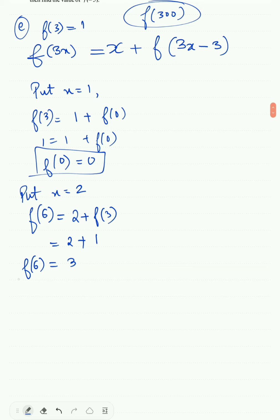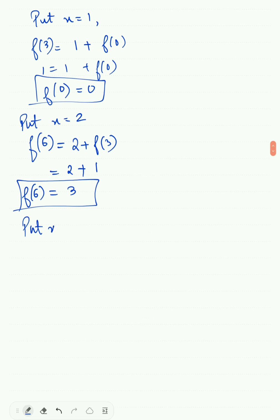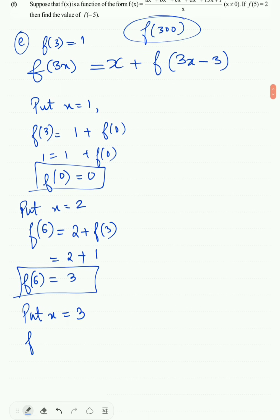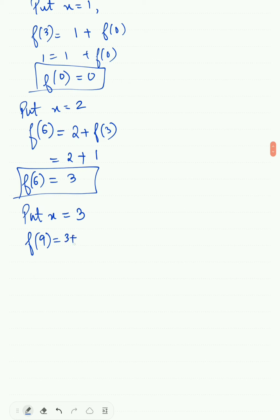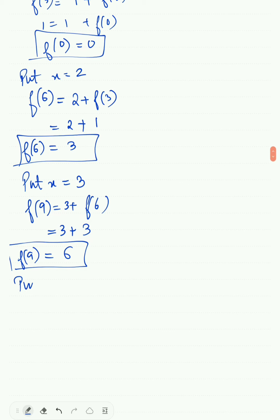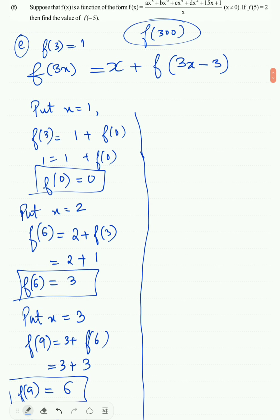Put x equals 2: f(6) equals 2 plus f(3) equals 2 plus 1 equals 3. Put x equals 3: f(9) equals 3 plus f(6) equals 3 plus 3 equals 6. Put x equals 4: f(12) equals 4 plus f(9) equals 4 plus 6 equals 10.